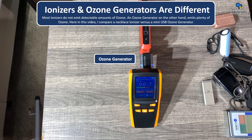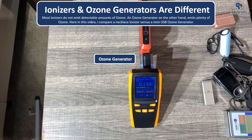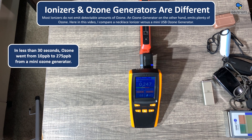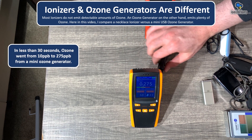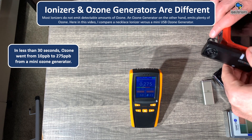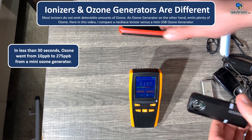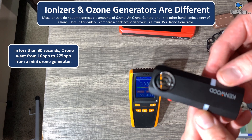We started off at 10 parts per billion, and as you can see, ozone is now skyrocketing. And that's how quick it can rise. This is just a mini-ozone generator — this is not even a full-sized one. In less than 30 seconds, we went from 10 parts per billion to 275 parts per billion ozone using a mini-ozone generator.